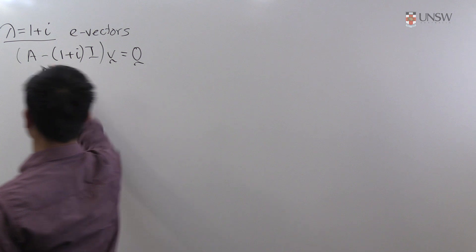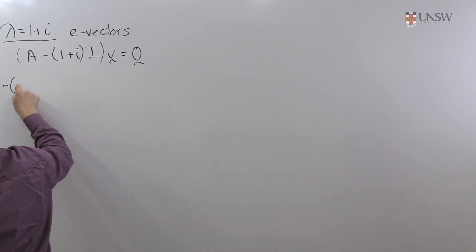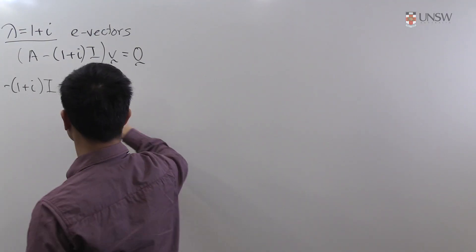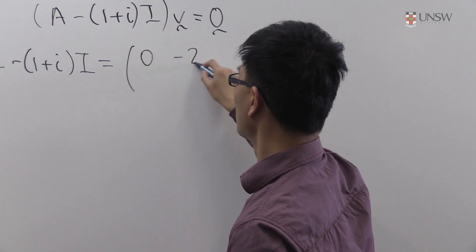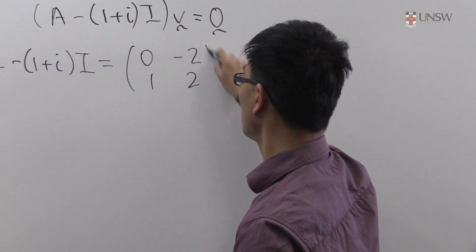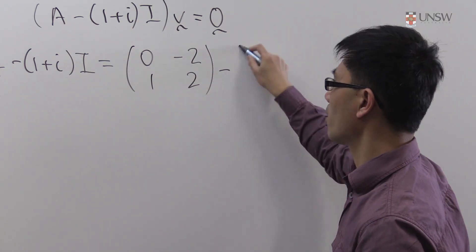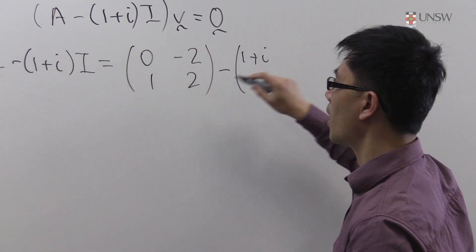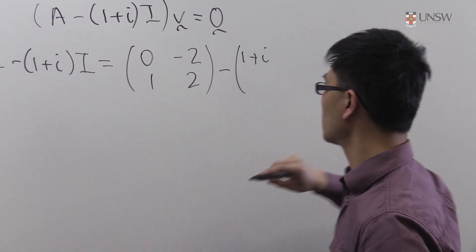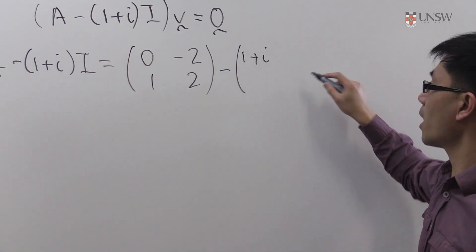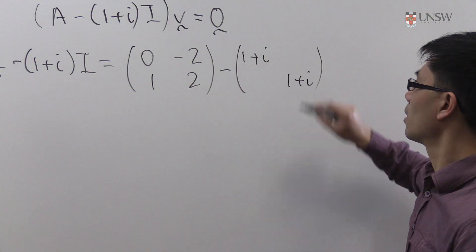So let's write down what this is. A minus 1 plus i times I is equal to [[0, -2], [1, 2]], that was the matrix A, and we have to subtract 1 plus i times the identity matrix. So that's just 1 plus i on the diagonals and 0 elsewhere.